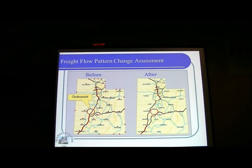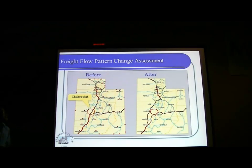As you can see, if we have a choke point on I-15 interstate here, the flow is going to be using the state route. We need to see that there is a driver impact on the flow. So this is showing what the freight flow change looks like in terms of choke point disruptions.